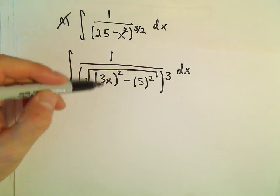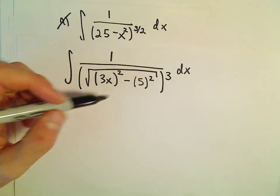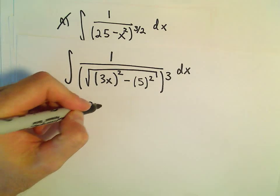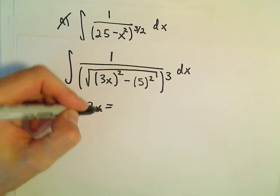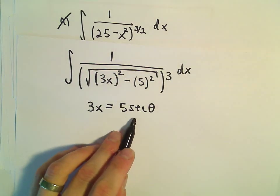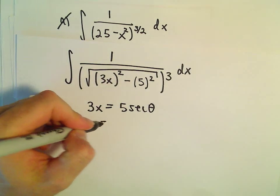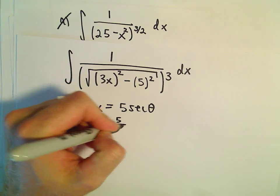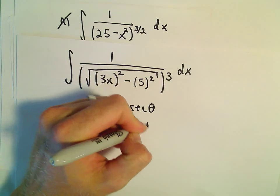So normally when we had a variable squared minus a number squared, that's when we use secant. In this case, instead of just having x equals 5 secant theta, we're going to have 3x equals 5 secant theta. So I'm going to divide both sides by 3.